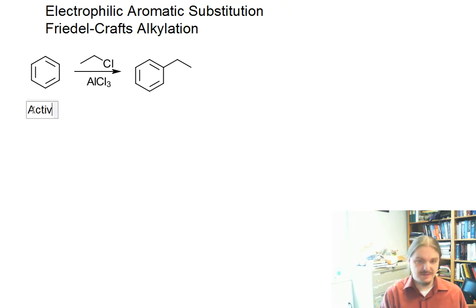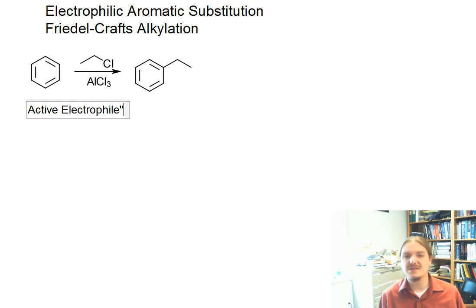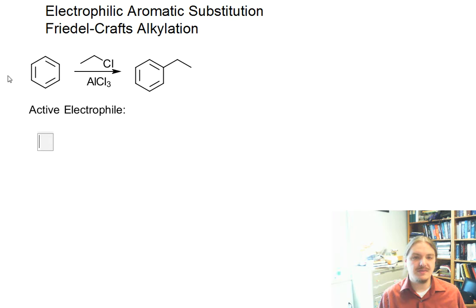And so the active electrophile then is formed by the reaction of the alkyl halide with the Lewis acid catalyst. And what I am going to draw for you, if you've watched the video on the halogenation reactions, this is going to look very familiar.